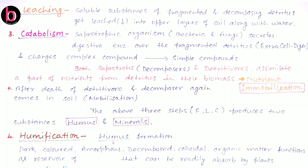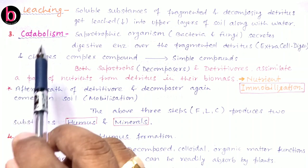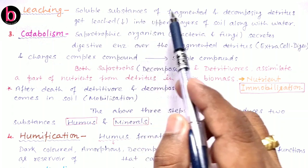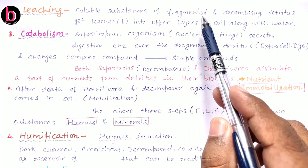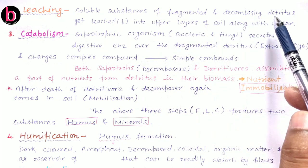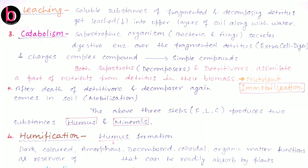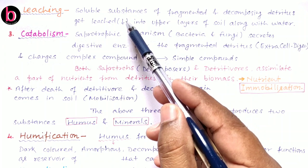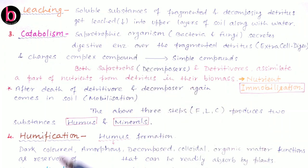The second step of decomposition is leaching. Leaching is the movement of soluble substances present in fragmented decomposing detritus along with the water current, so these soluble substances move down into the soil surface.